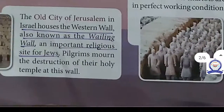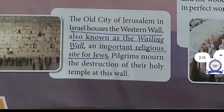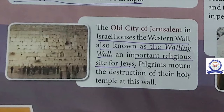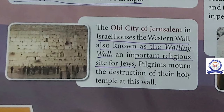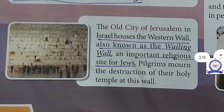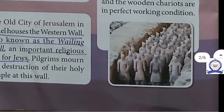The next one is the Old City of Jerusalem, in Israel. It houses the Western Wall, also known as the Wailing Wall. It is a holy temple.